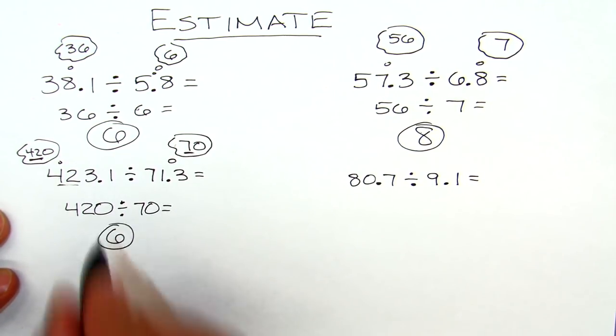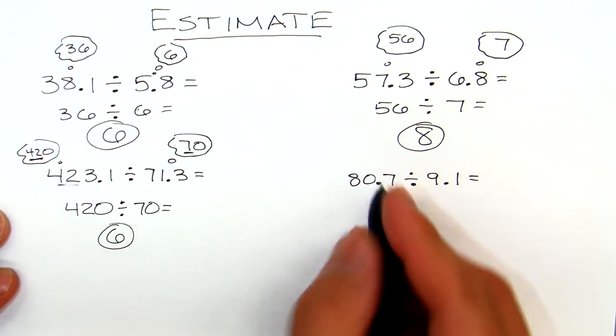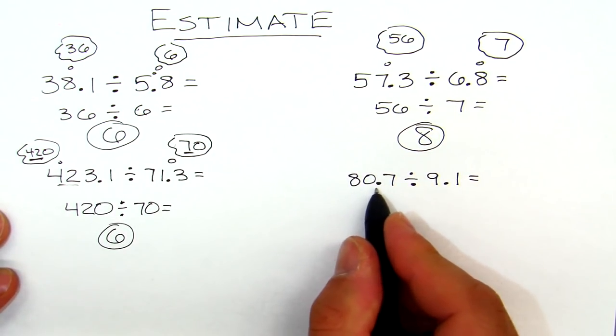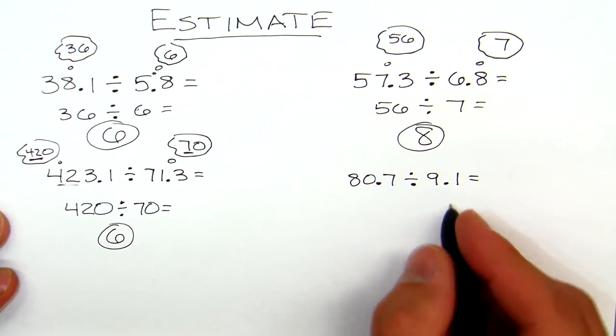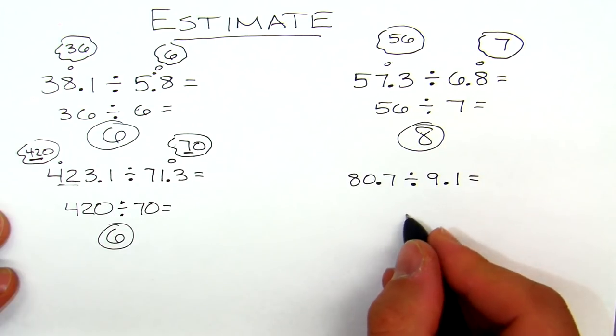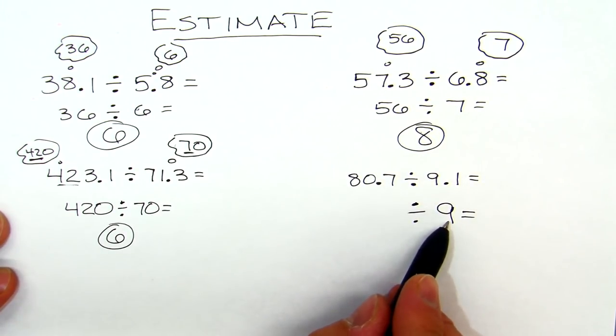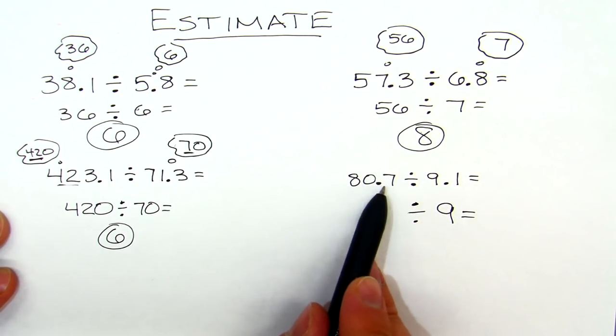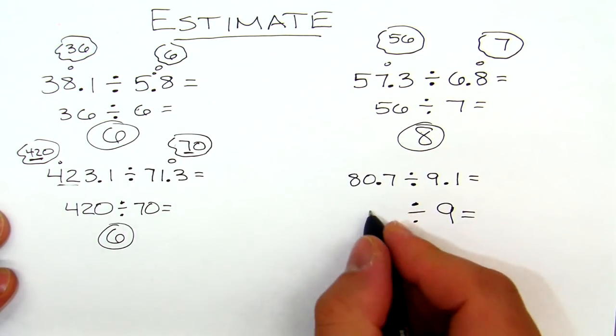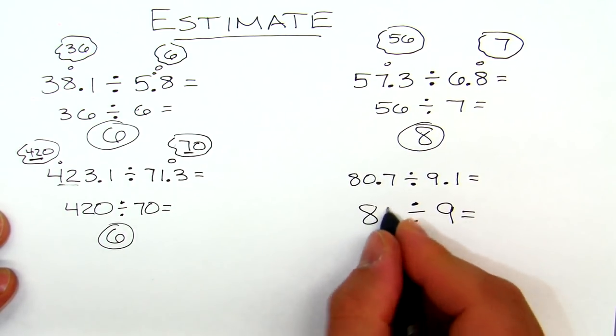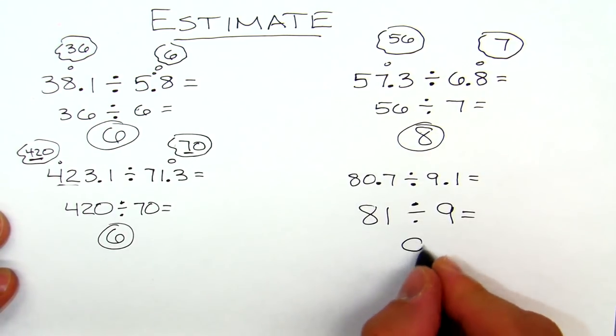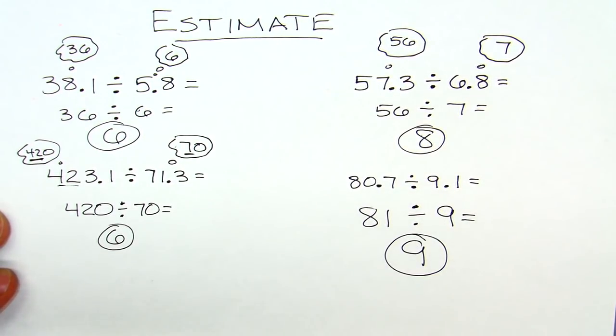This last one, I'm gonna think that 80.7 divided by 9.1 - obviously I'm gonna think about 9.1 being a 9. Now what multiple of 9 is close to 80.7? Let's see, that would be 81. And 81 divided by 9 equals 9.